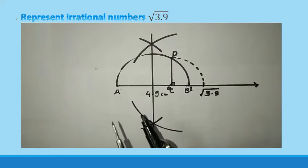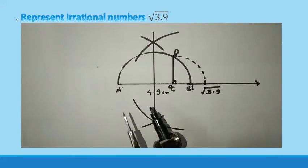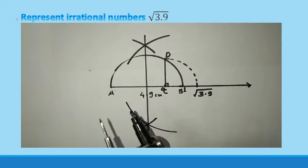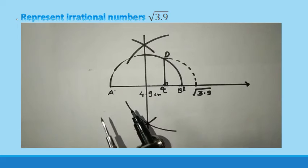If the number is root 3 take 4 cm you have to draw a line segment. If the number is root 4.5 you have to draw a line segment of 5.5 and then proceed.